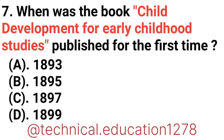Question No. 7: When was the book Child Development for Early Childhood Studies published for the first time? Option A: 1893. Option B: 1895. Option C: 1897. Option D: 1899. The correct answer is Option B: 1895.